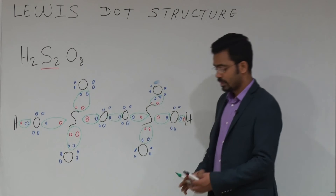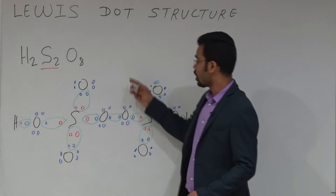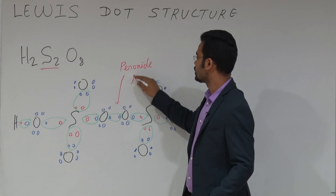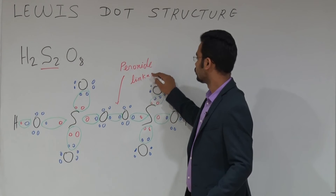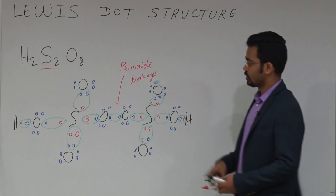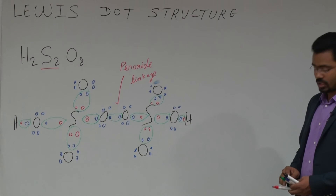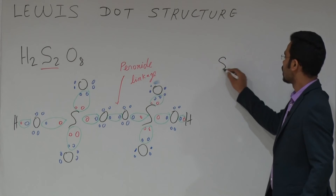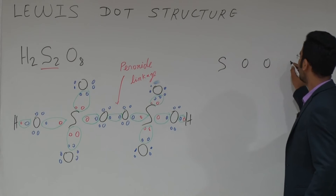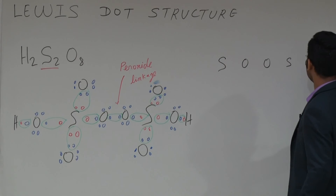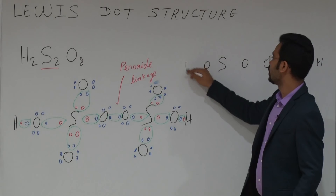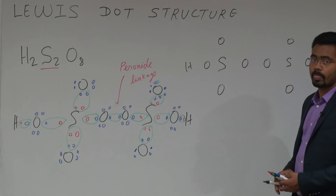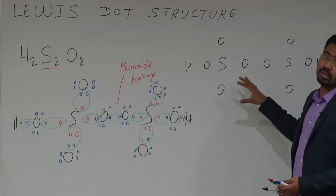This linkage is called the peroxide linkage. This is the structure of H2S2O8. You can also draw the bond line structure: sulphur — oxygen — oxygen — sulphur, with oxygen and hydrogen on the sides. The structure must be symmetrical. Here is a single bond, and there are double bonds on the other oxygens. The structure is symmetrical.